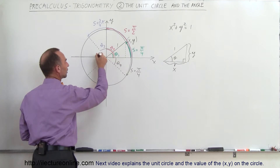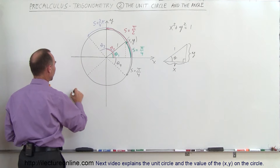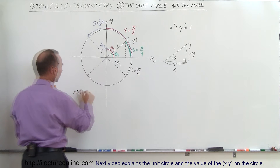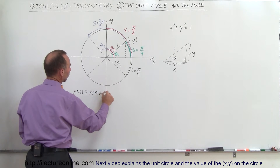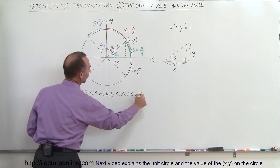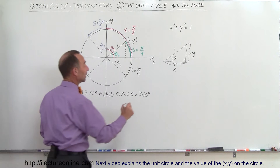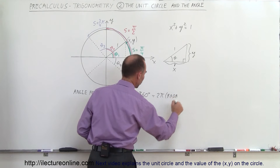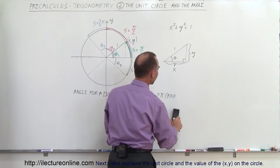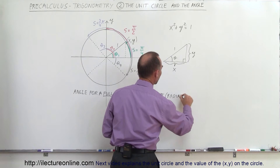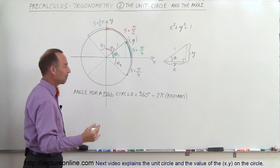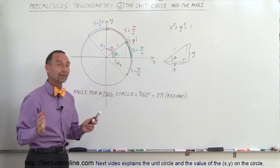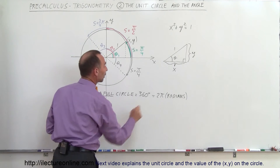If we go all the way around the circle, that is equal to 360 degrees. So the angle for a full circle is equal to 360 degrees, or in terms of radians, 2 pi radians. Quite often, you will see angles expressed in terms of radians and they will not write 'radians' — they will simply say something like 2 pi, or pi over 4, pi over 6, or 3 pi over 4. They always mean radians but may not necessarily say it. So the angle may be expressed either in degrees or in radians.